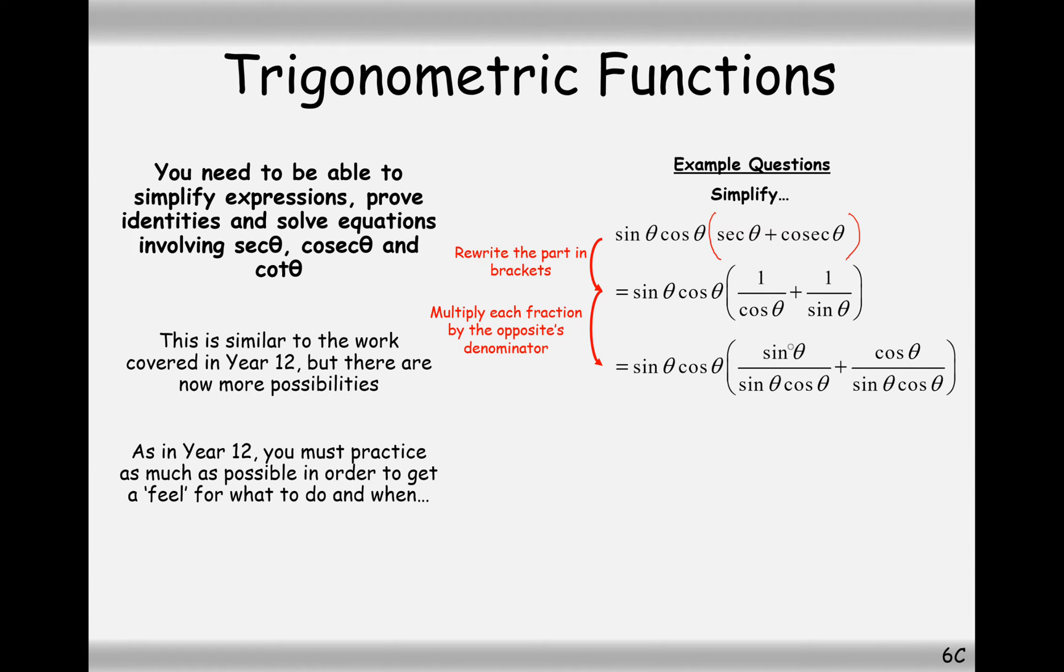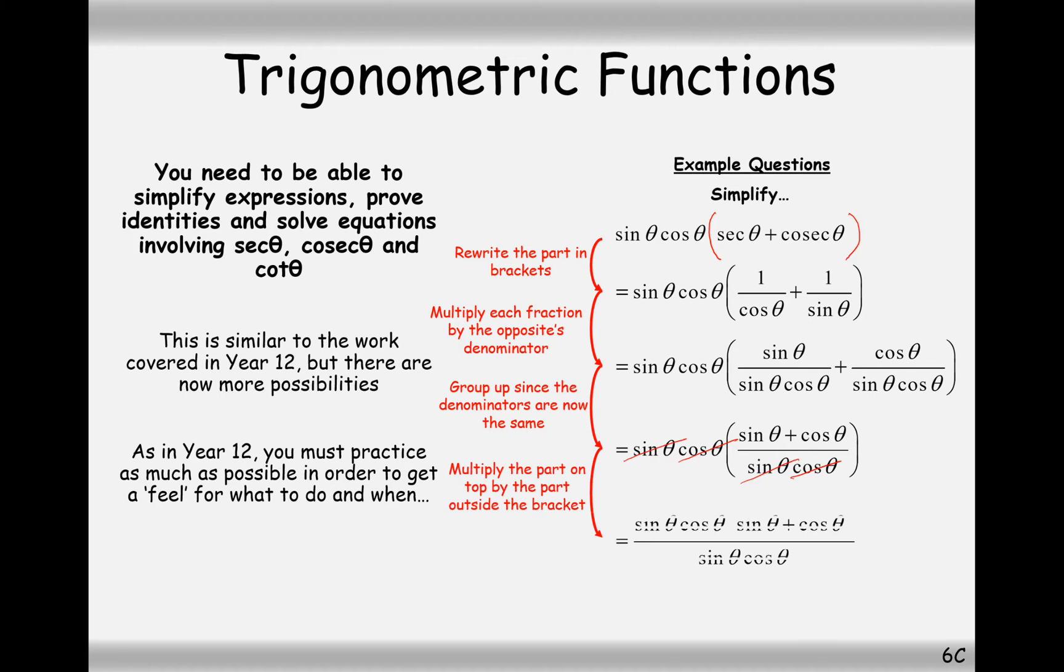So, in this case here we have sine cos multiplied by this big expression here. It looks more complicated, but that's actually going to help us simplify later on. You can see here the sine and the cos will cancel out with the sine and the cos down here. So, this will actually end up simplifying to sine theta plus cos theta.